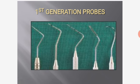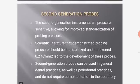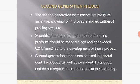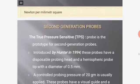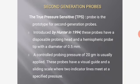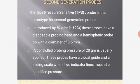Second generation probes are pressure-sensitive instruments that allow improved standardization of probing pressure. Scientific literature demonstrated probing pressure should be standardized and not exceed 0.2 N/mm, leading to the development of these probes. They can be used in general and periodontal practices without requiring computerization. The true pressure-sensitive probe, introduced by Hunter in 1994, is the prototype for second generation probes. It has a disposable probing head and hemispheric probe tip of 0.5 mm diameter, with a controlled probing pressure of 20 grams and a visual guide with sliding scale.